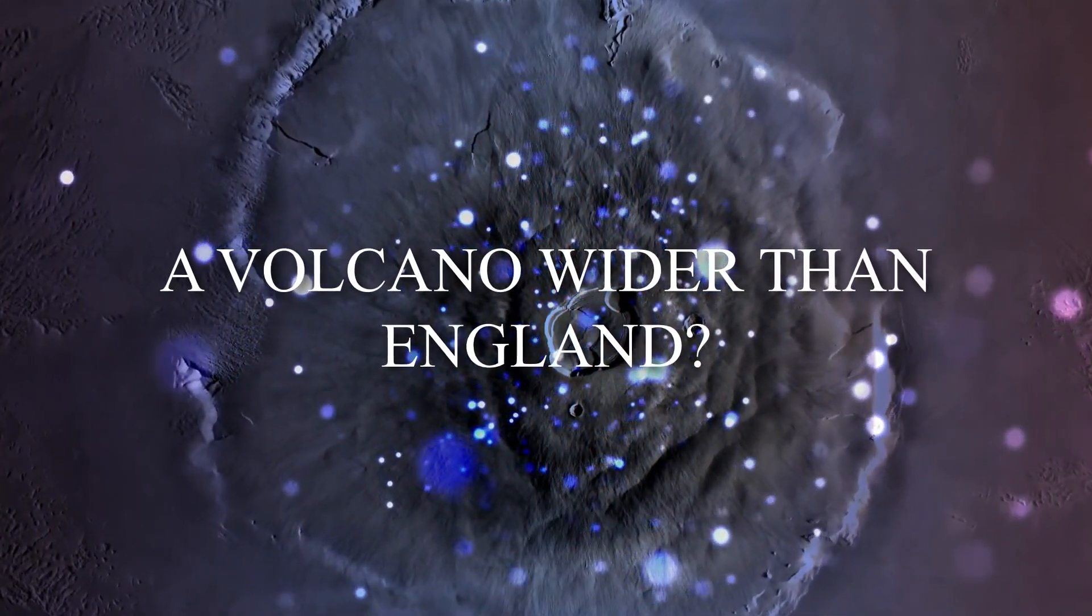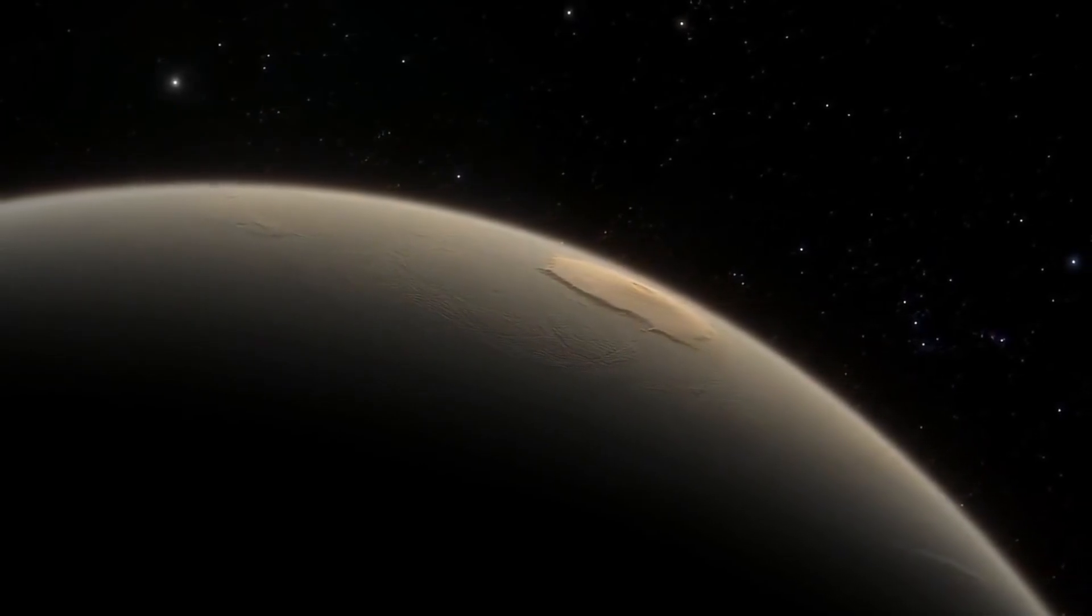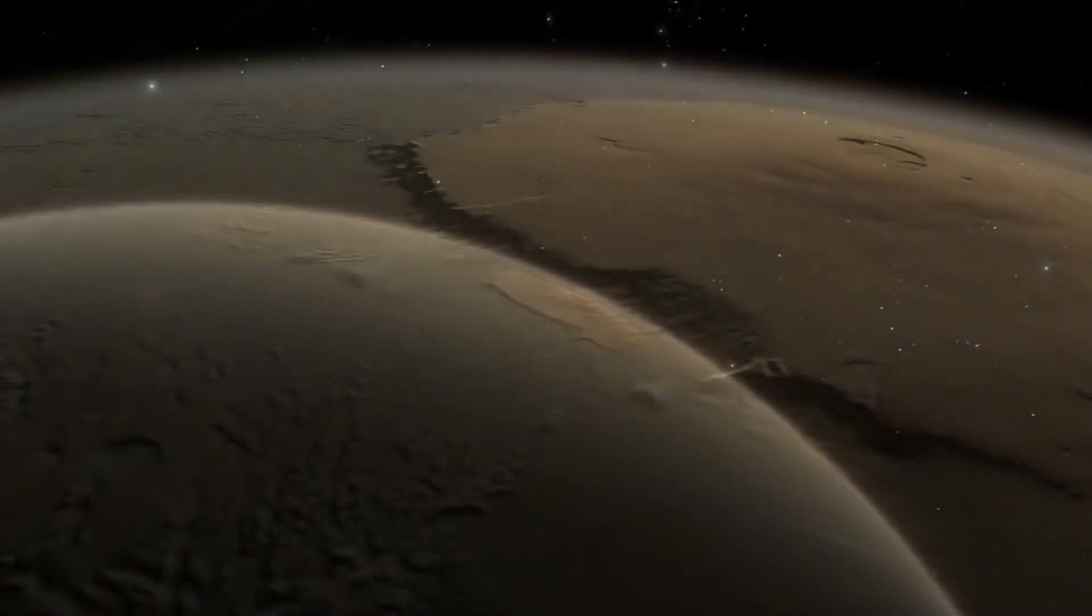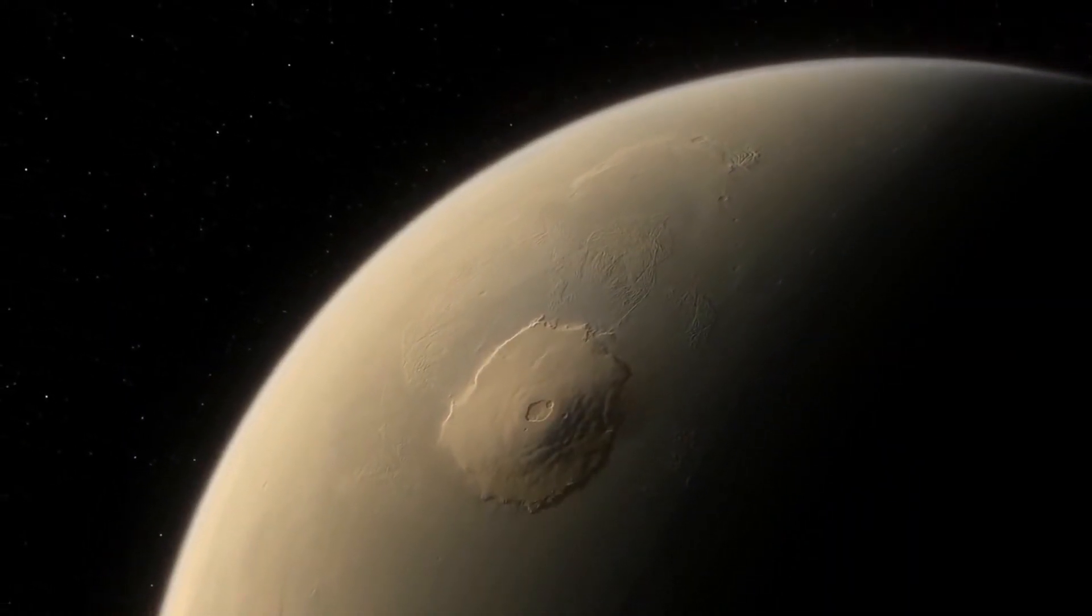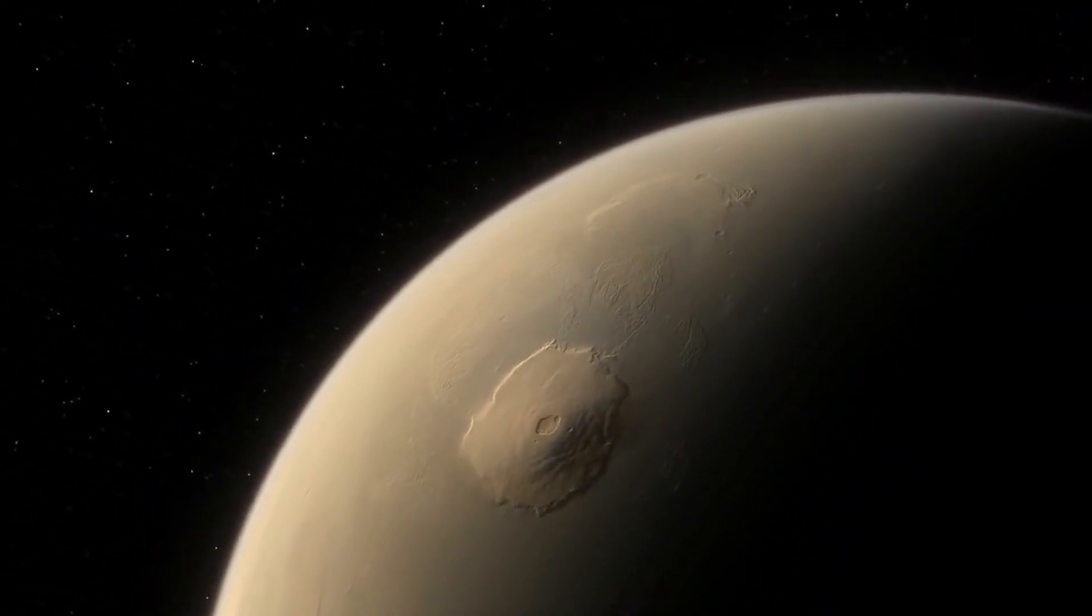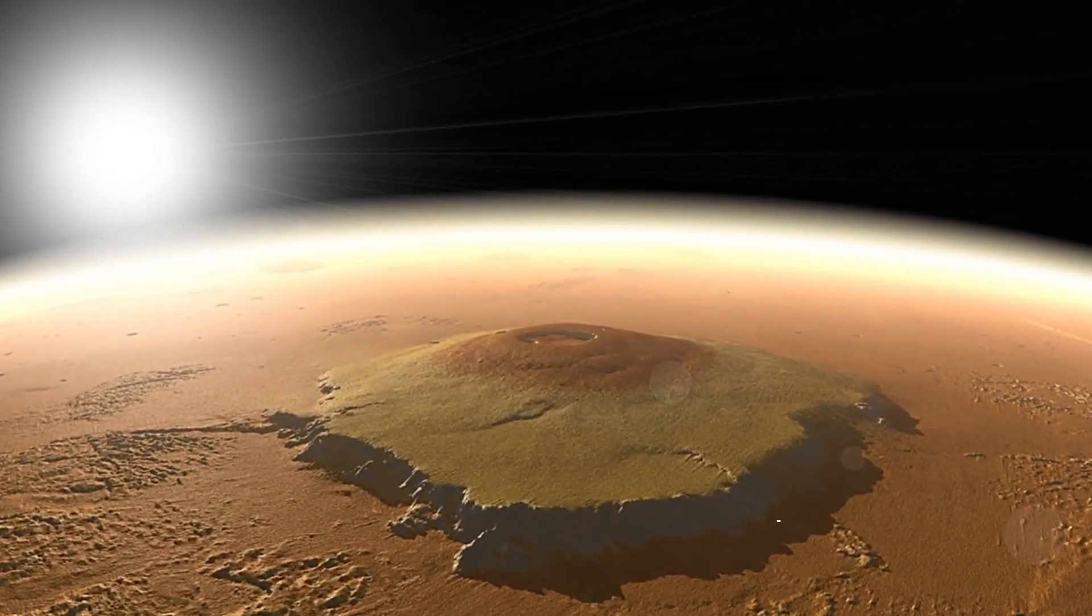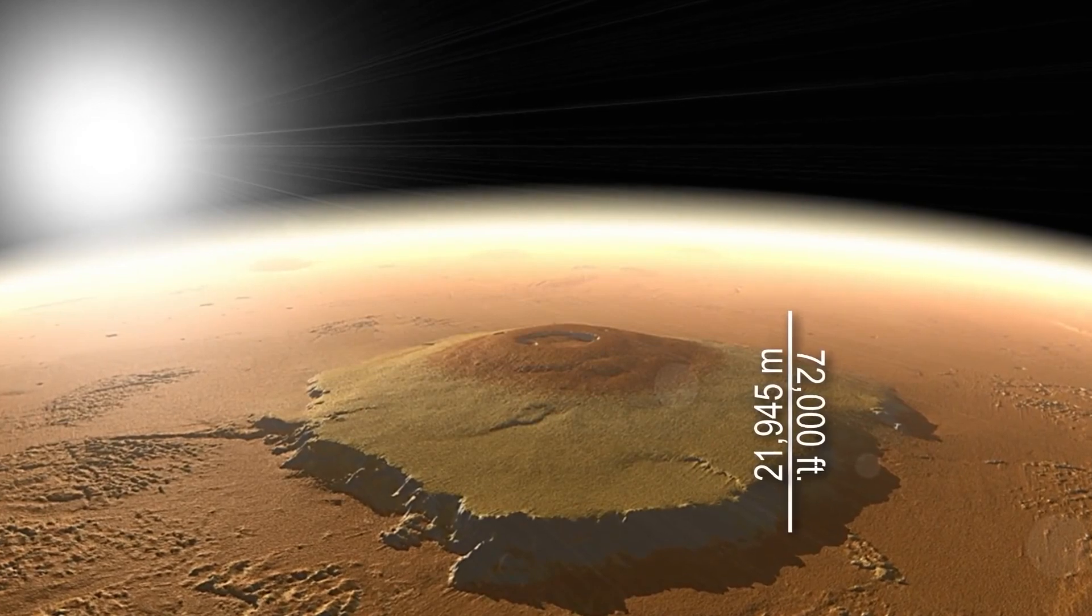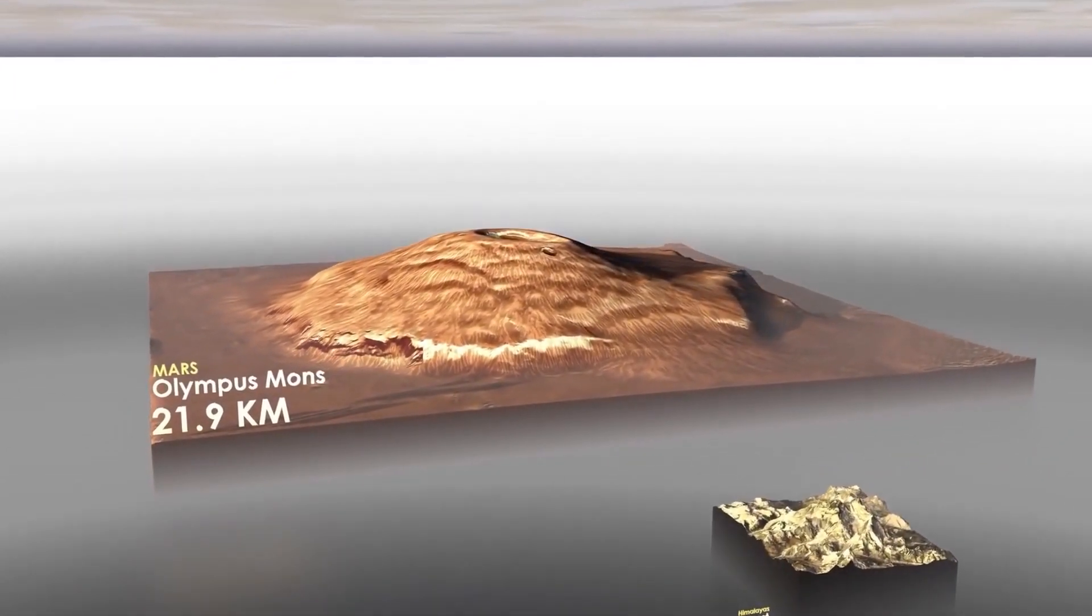Number one: How about a volcano wider than England? Olympus Mons is enormous, and it's on Mars, which is about half the size of Earth. Fancy climbing this volcanic mountain? Good luck, unless you think Mount Everest is a nice warm-up, because this monster is 72,000 feet tall, two and a half times the size of Earth's highest peak.